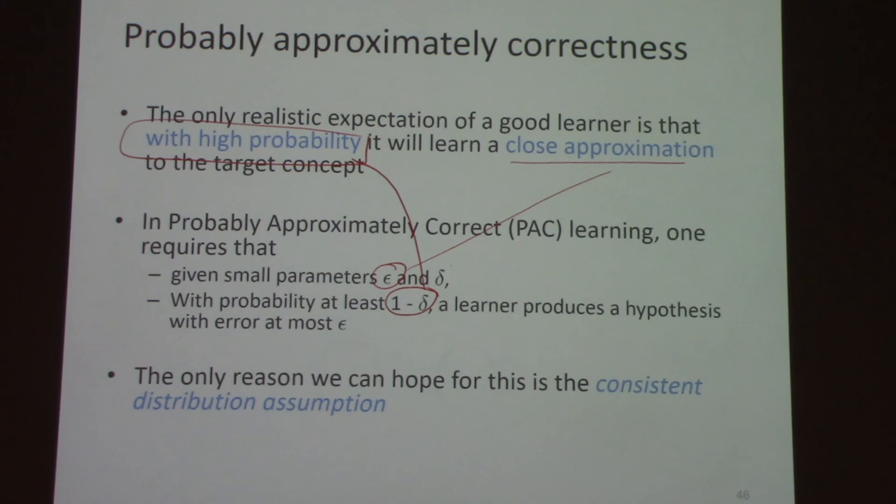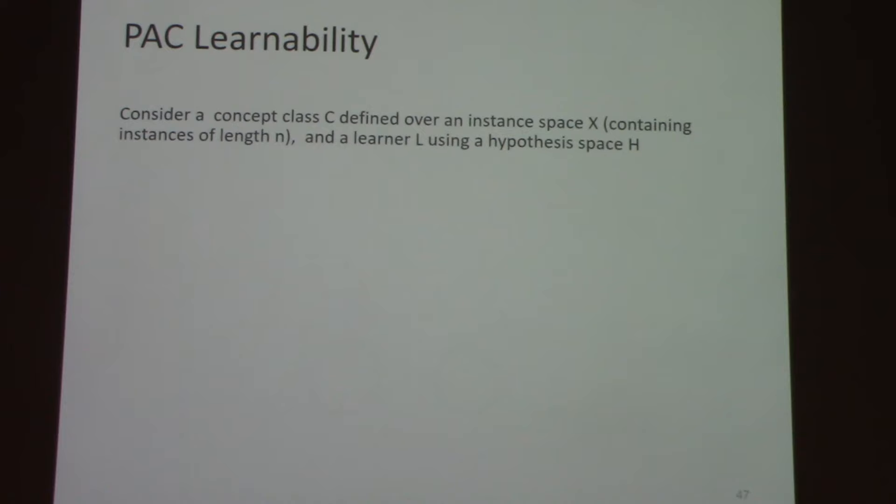Every example is drawn from the same distribution and every example is sampled independently of each other. This was roughly the last thing we saw in the previous lecture. Now, let's define PAC learnability — it's just a way of formalizing these intuitions. I want you to keep in mind that what I'm going to present next is just a definition. I'm not proving anything; I'm just defining. If a concept class has a certain property, then I'm going to call it PAC learnable.